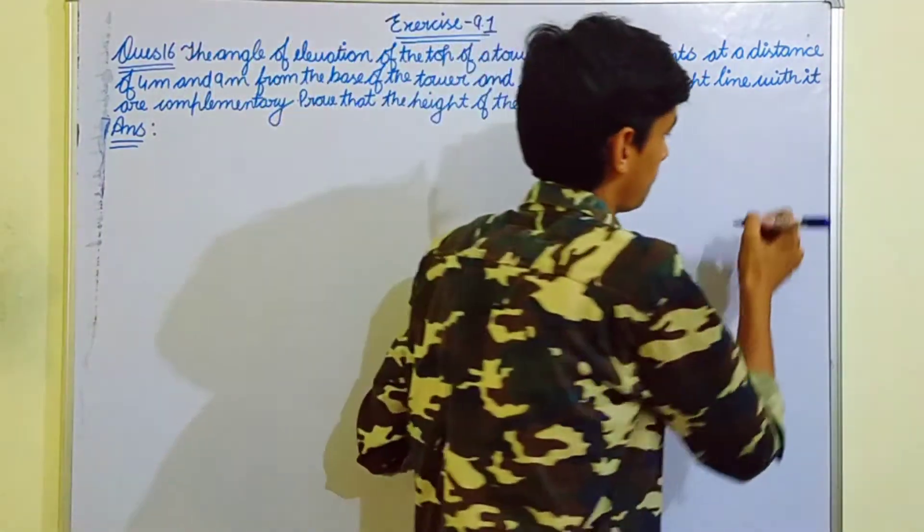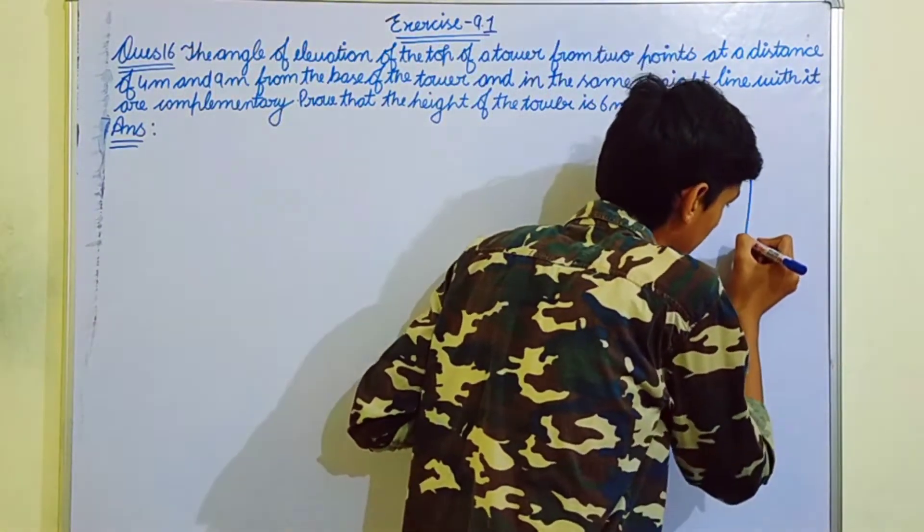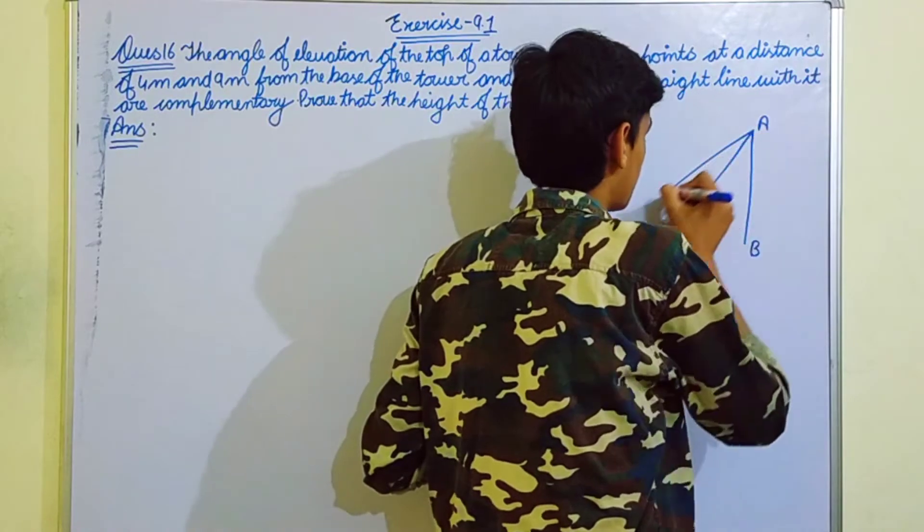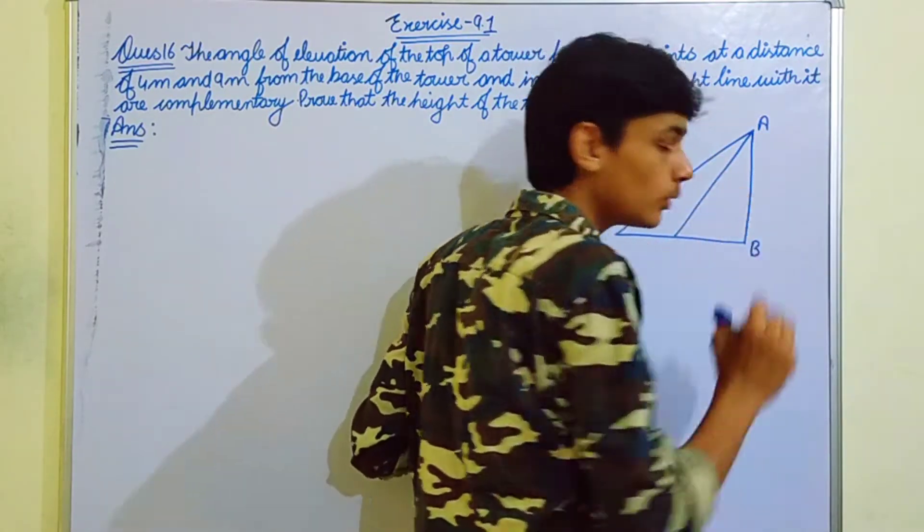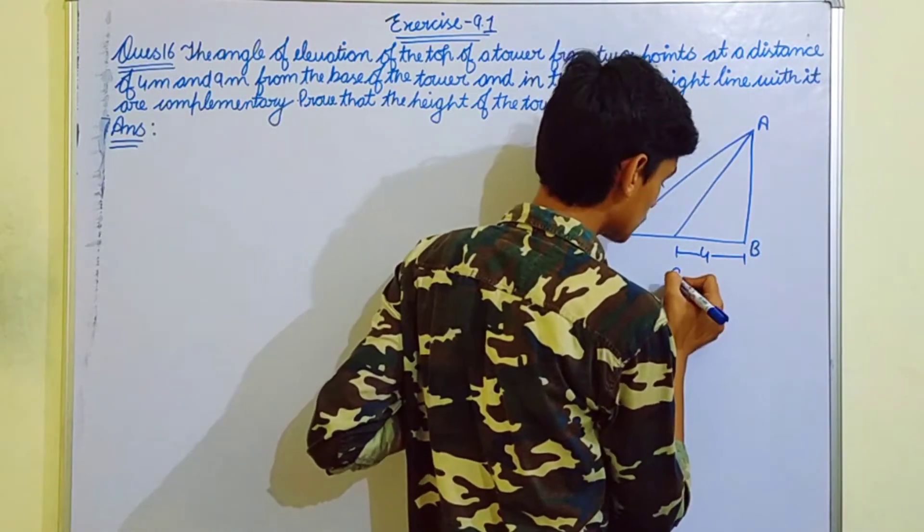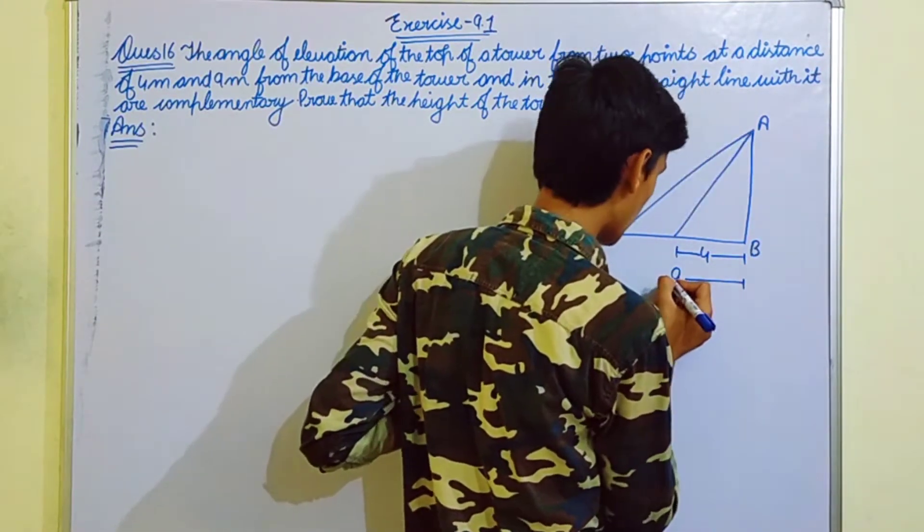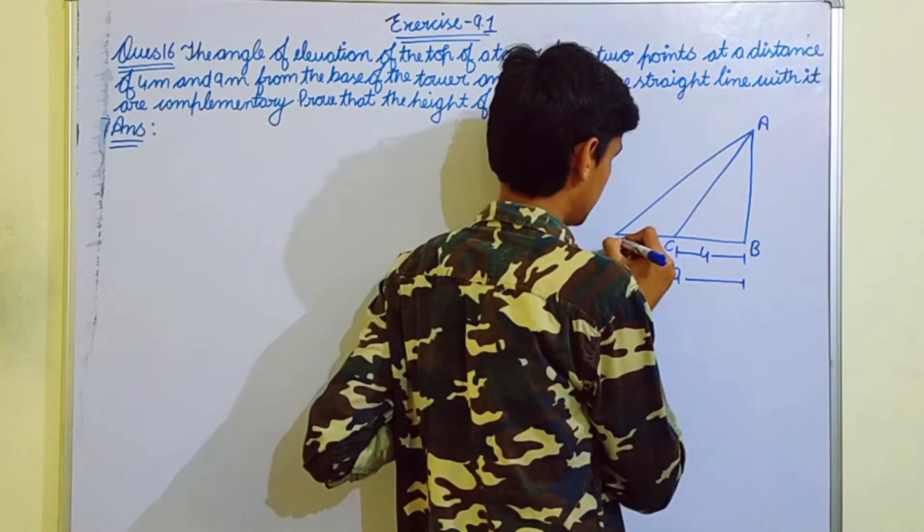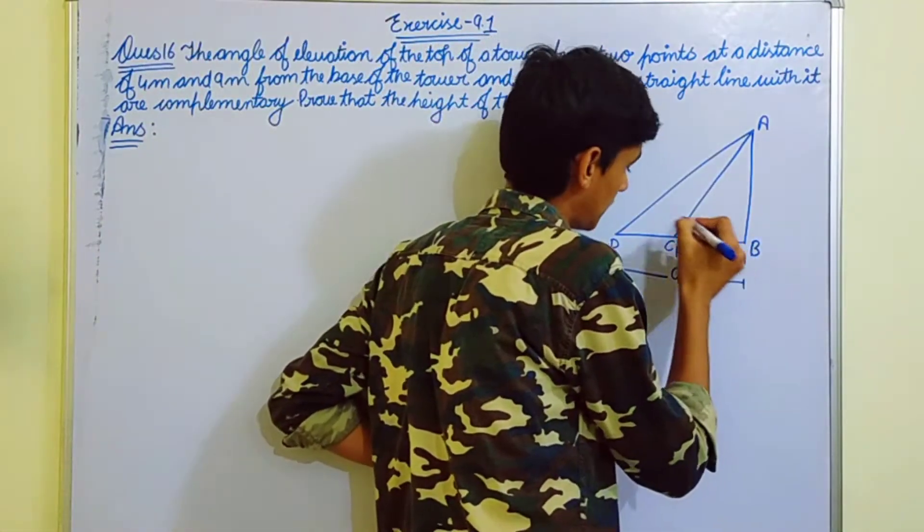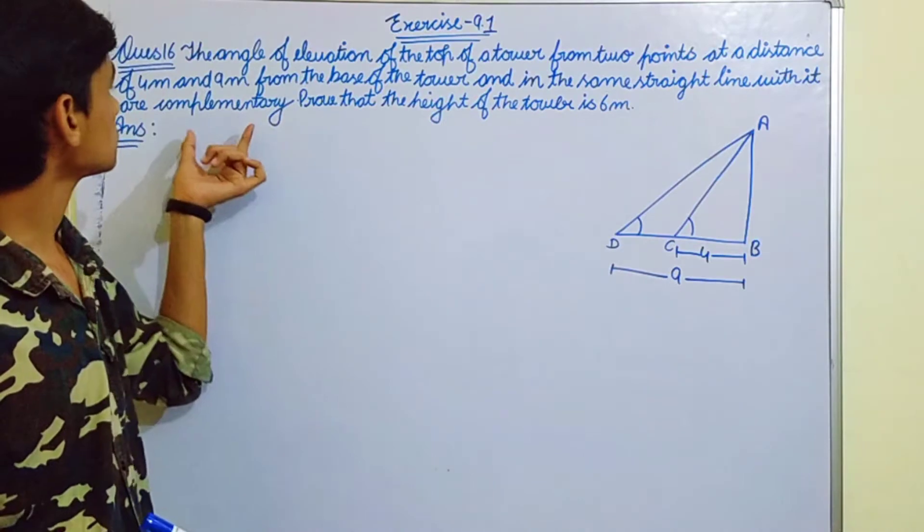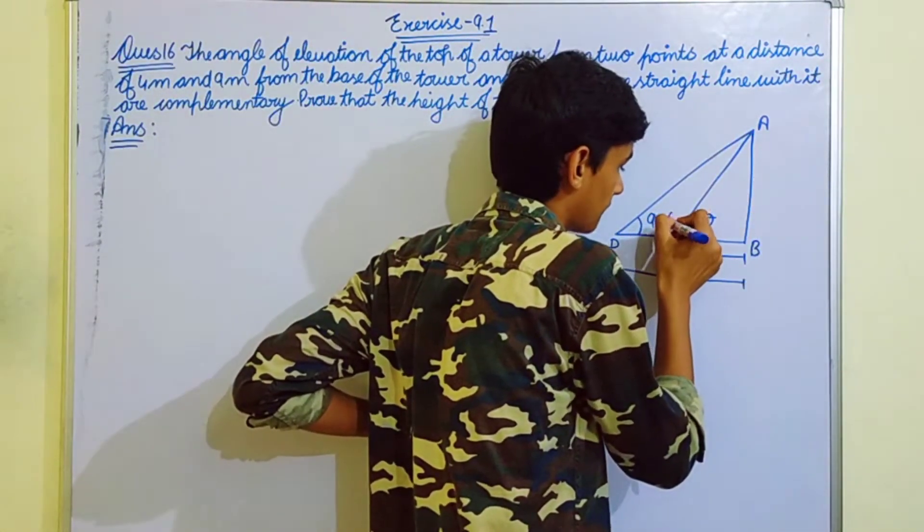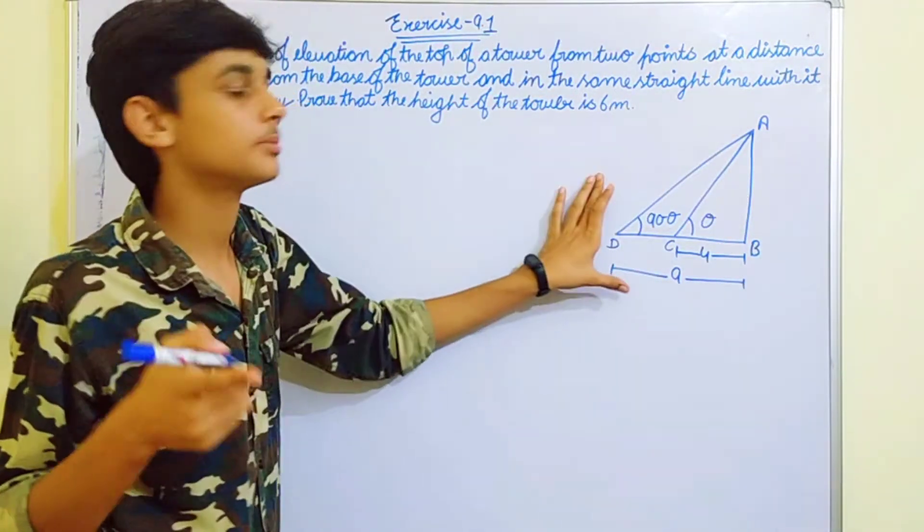For solving this, the most basic diagram of the tower - one angle of elevation to the top of the tower. So AB is the top of the tower and one point is 9 meter. This angle of elevation and this angle of elevation are complementary, so this is 90 minus theta because complementary angles are those angles whose sum is 90 degree.